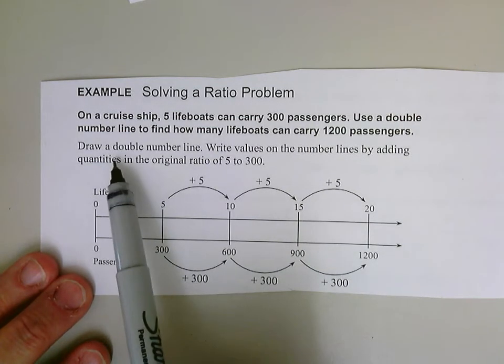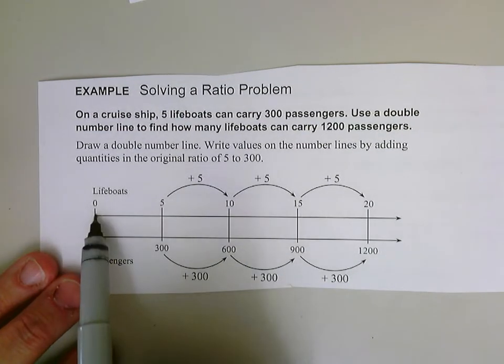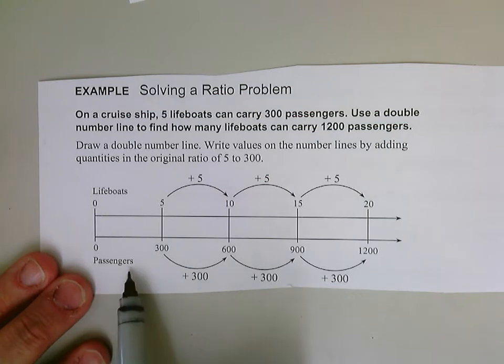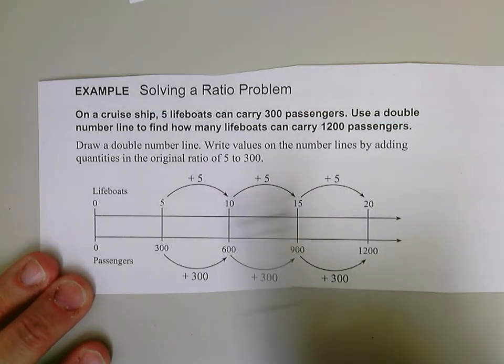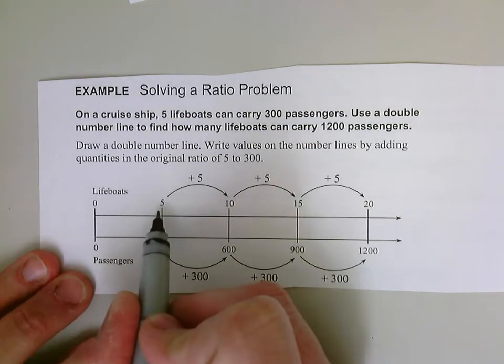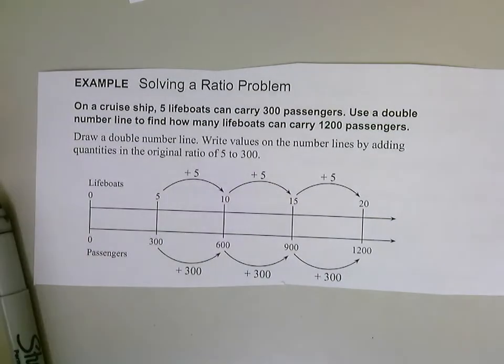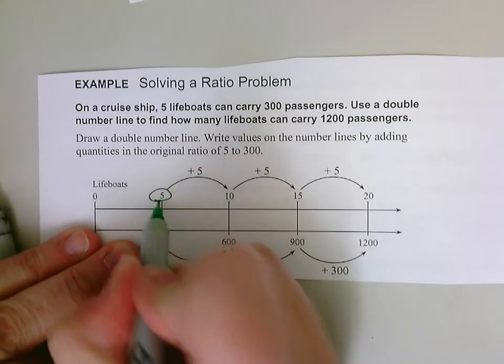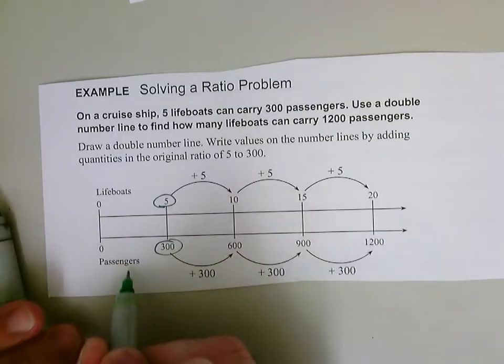So we're going to draw a double number line. We're going to start, and we're going to have this top one is for lifeboats, and the bottom number line is for passengers. Write values on the number lines by adding quantities in the original ratio of five to 300. So here's my original ratio. I have five lifeboats to every 300 passengers.